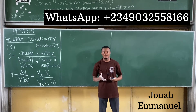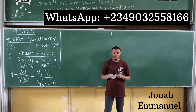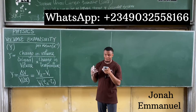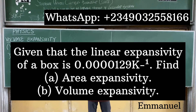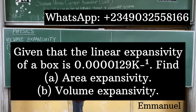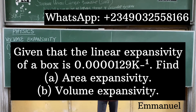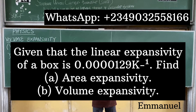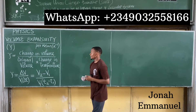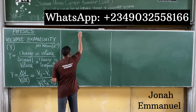Let's try one more example. The question says: given that the linear expansivity of a box is 0.0000129 per Kelvin, find (1) the area expansivity β, and (2) the volume expansivity γ.